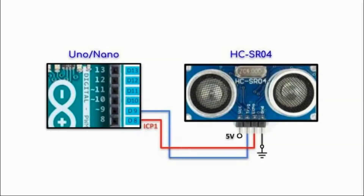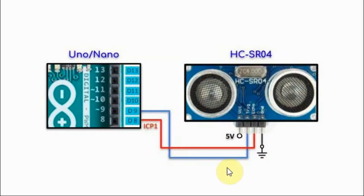This circuit diagram shows the interfacing of the ultrasonic sensor with the Arduino. The trigger line can be connected to any available digital pin — here we are connecting it to D9. The echo line must be connected to pin D8 because pin D8 is programmed as the input capture pin for Timer 1, which is used to measure the echo pulse width coming from the sensor.